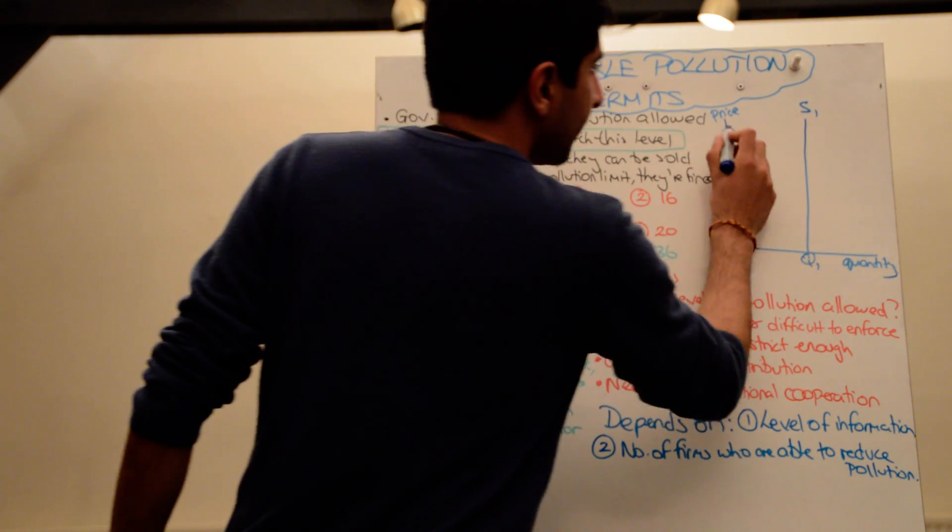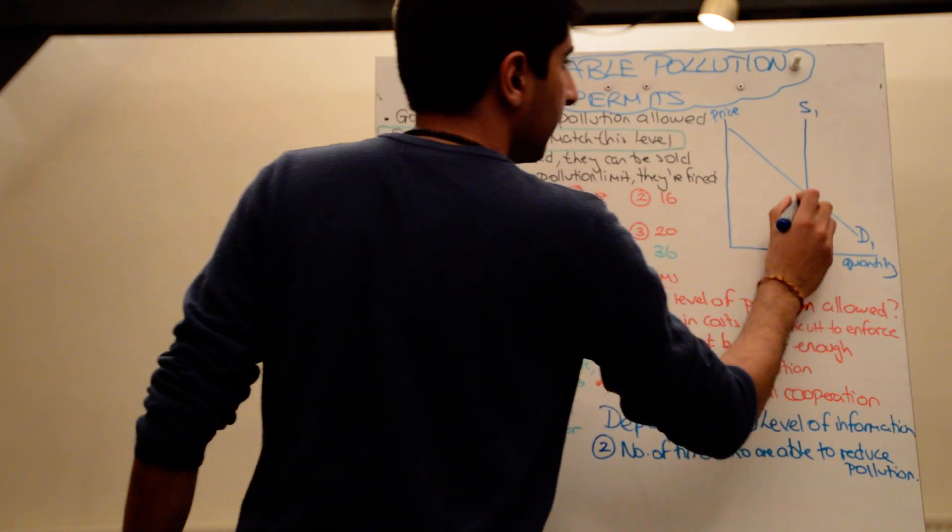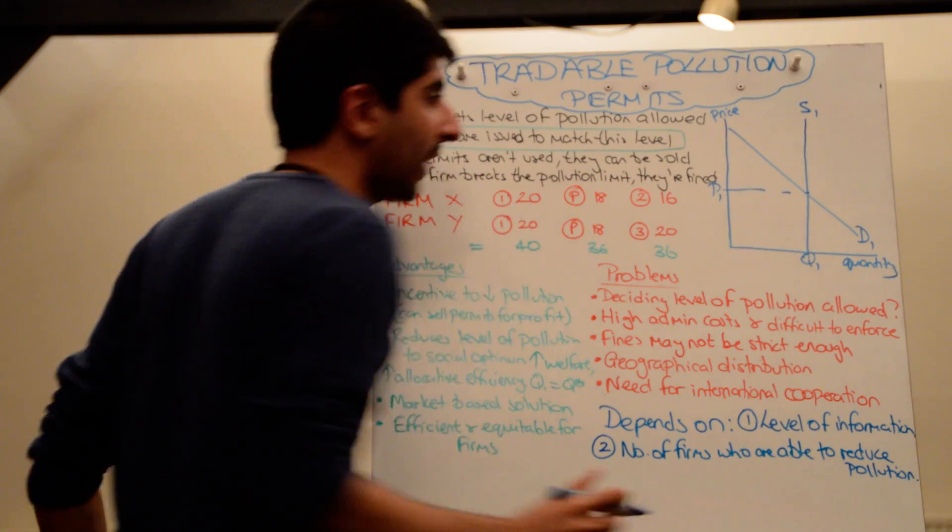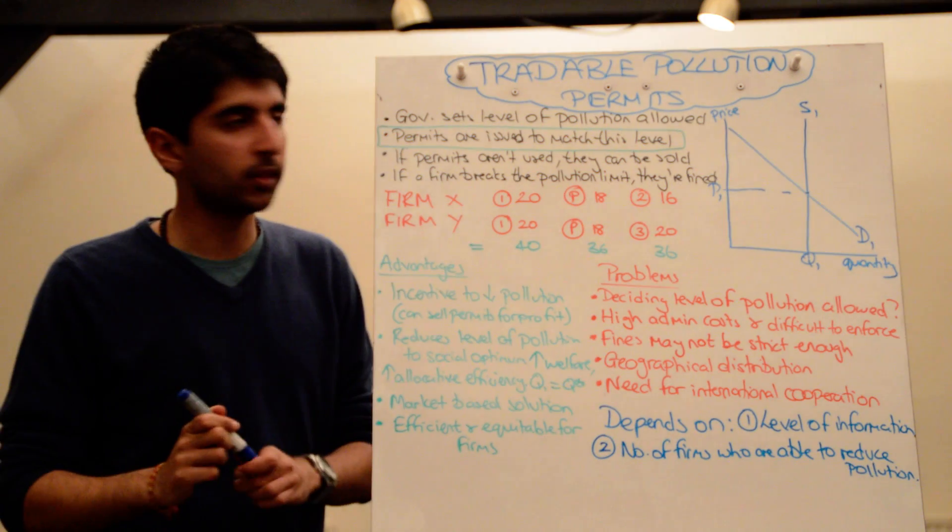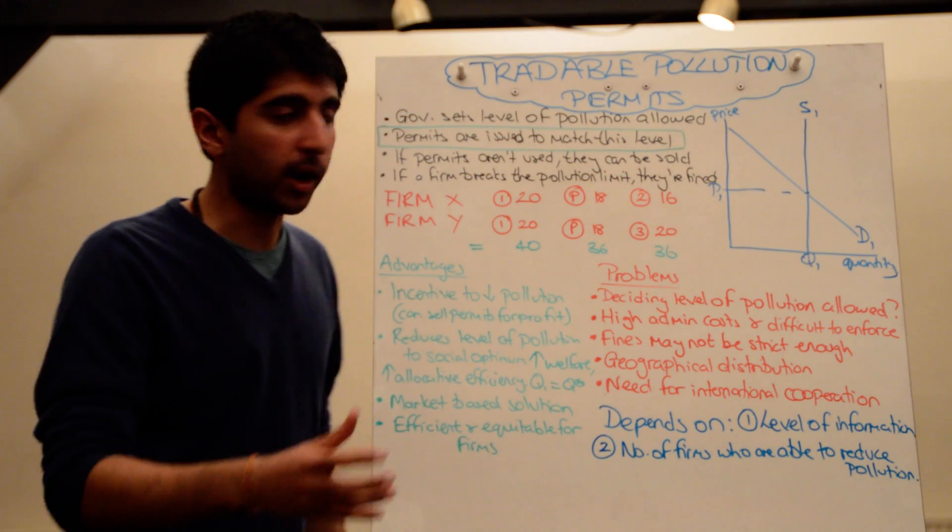And the government essentially is trying to get to Q star when it sets that. And there is a normal demand for permits, a down-sloping demand curve for permits. And where the two meet, we have a price. And that is the price of permits in the economy. So that's how permits actually work in the market.